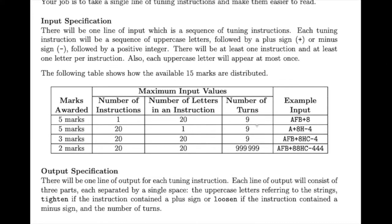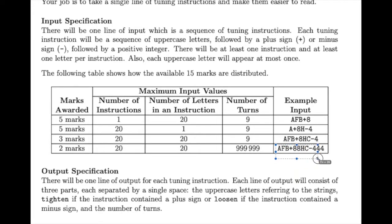To get all 15 marks, you have to translate that into output like 'AFB tighten 8' on one line, then 'HC loosen 4' on the next. The number can go up to 999,000 — up to 999 turns.